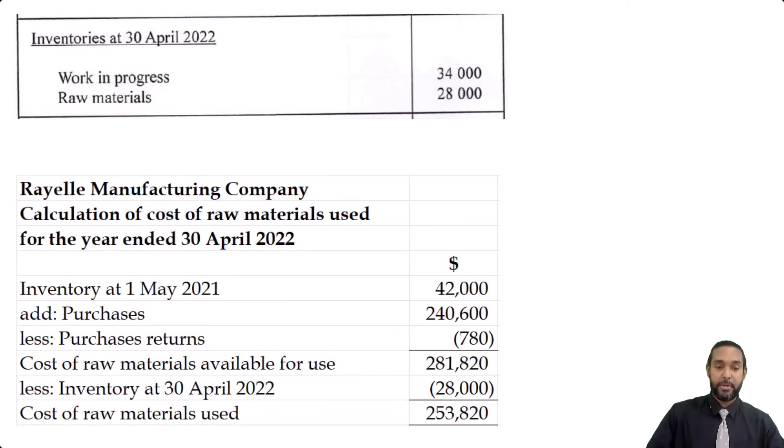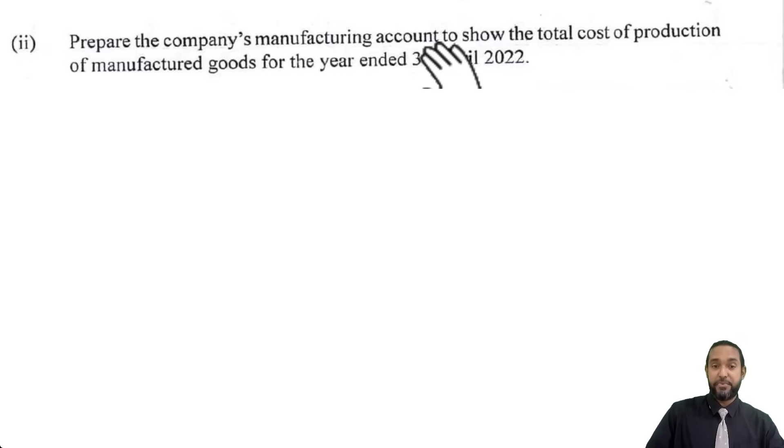The next part, let me pull it up real quick. They asked us to prepare the company's manufacturing account to show the total cost of production of manufactured goods for the year ended 30th April 2022. And they gave a nice little format here for 8 marks. Okay, let's go back to the information very quickly.